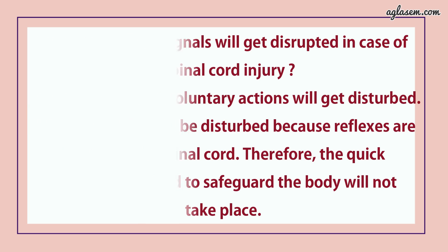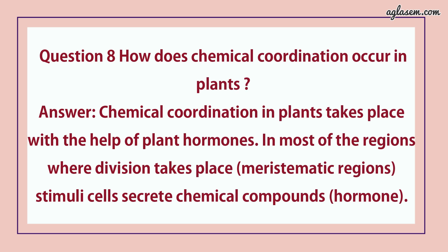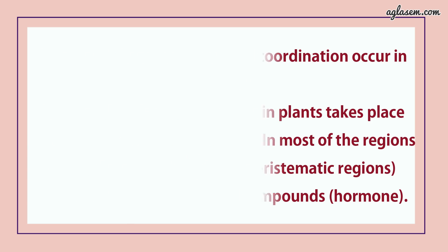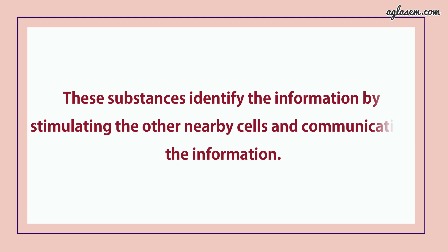Question number 8 says, how does chemical coordination occur in plants? Answer is: chemical coordination in plants takes place with the help of plant hormones. In most of the regions where division takes place, stimulated cells secrete chemical compounds. These substances relay information by stimulating other nearby cells and communicating the information.